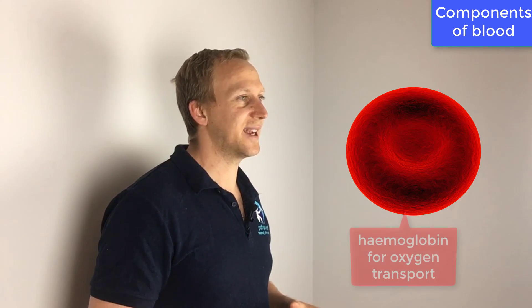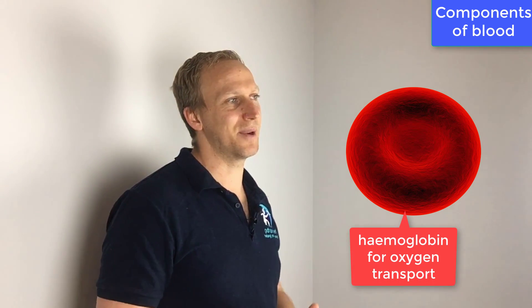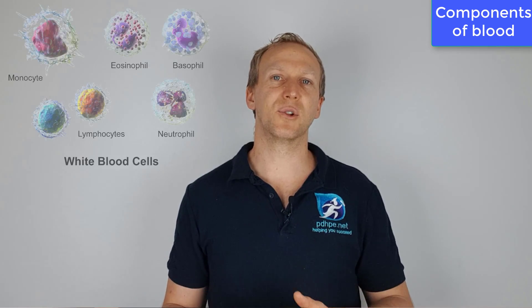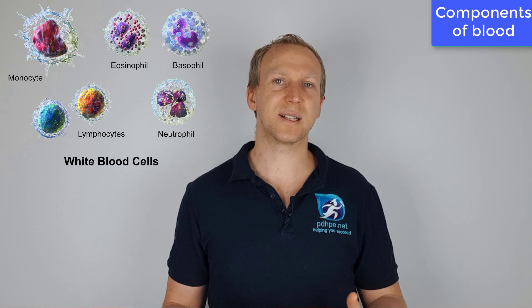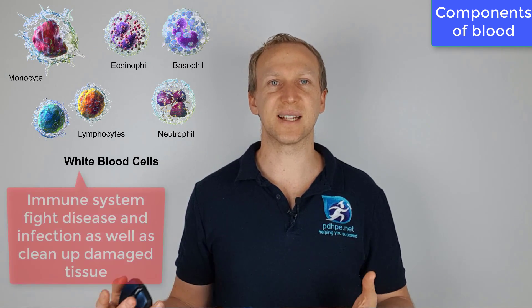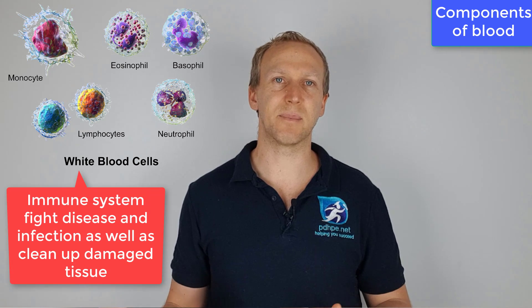There are four basic components of blood. The first is erythrocytes, also known as red blood cells. They contain hemoglobin and are responsible for the transport of oxygen, as well as breaking down carbon dioxide. Next, we have leukocytes, which are white blood cells. They are involved in your immune system — they fight disease and clean up debris.